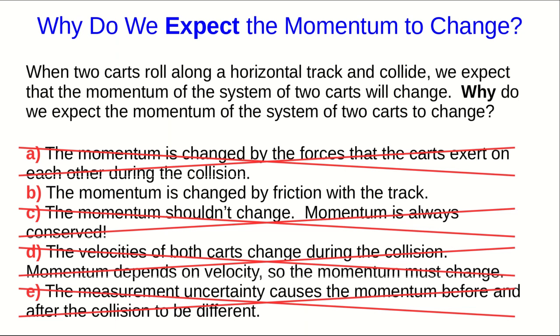And the answer about measurement uncertainty is also incorrect. Even if the momentum didn't change at all, then sure, measurement uncertainty would mean that our initial momentum would almost certainly be different from our measured final momentum. But if we correctly account for measurement uncertainty, we should find that they agree within uncertainty.